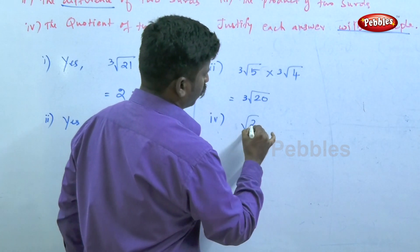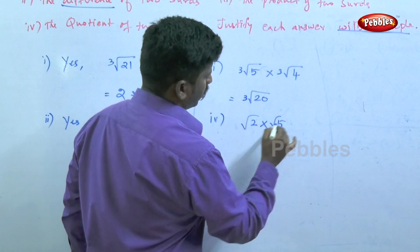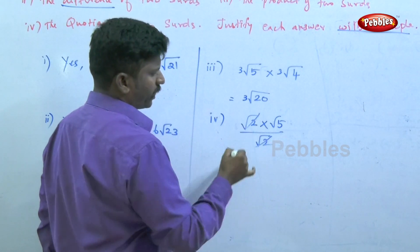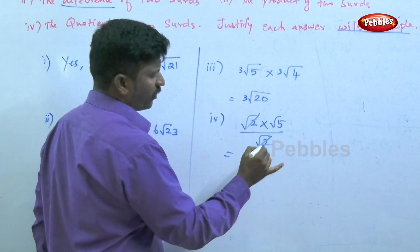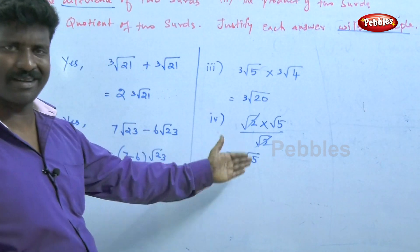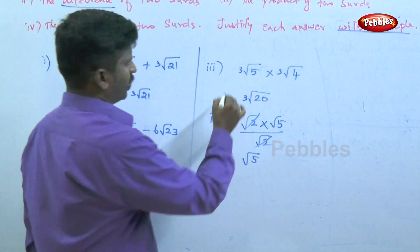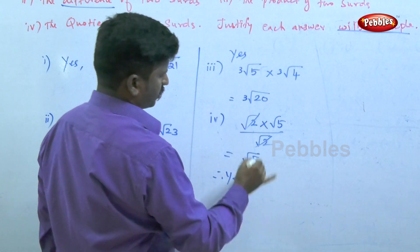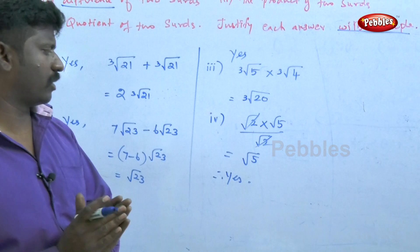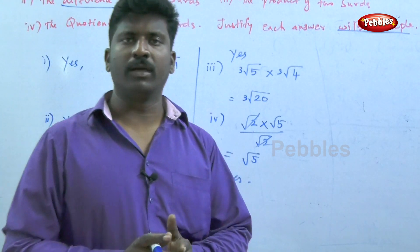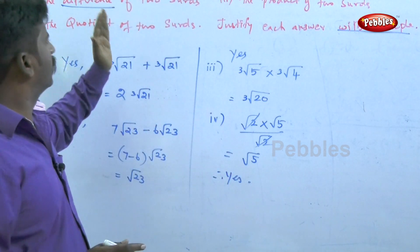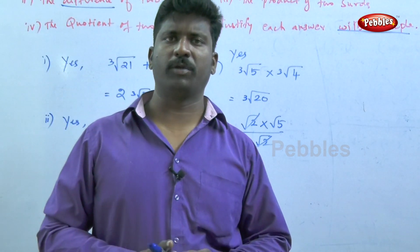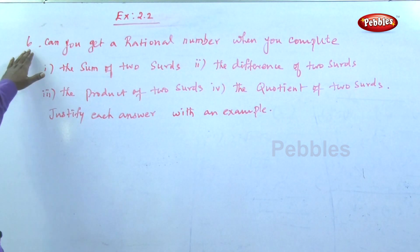The fourth point — quotient of two surds: root 2 times root 5 divided by root 2. The root 2 cancels, and the answer is root 5, which is also a surd. So for all four operations — sum, difference, product, and quotient — the result is a surd number.